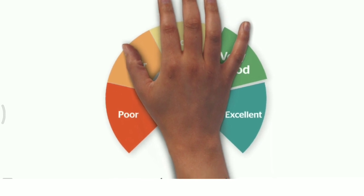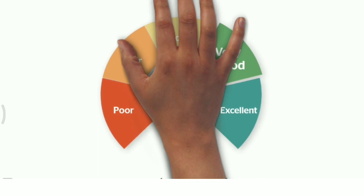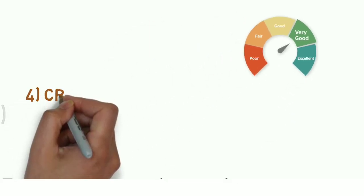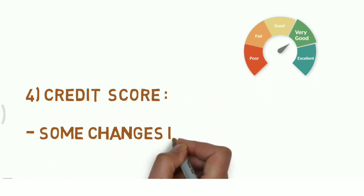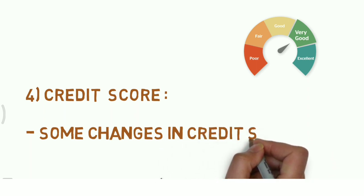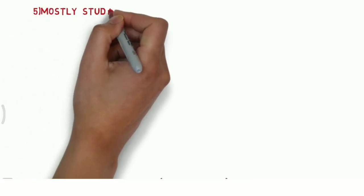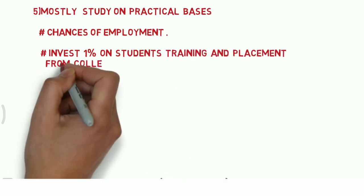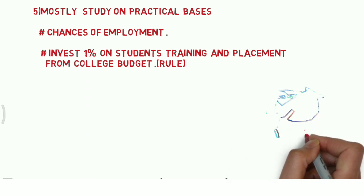The next rule is the credit score rule. As we all know, we follow a credit score system — the CGPA and SGPA — and certain credit scores for different institutes. Now this credit score rule has been brought under drastic changes. These changes will focus on individual subjects and the development of the student in that particular subject.